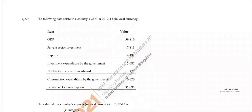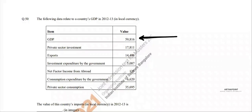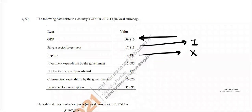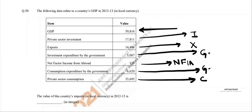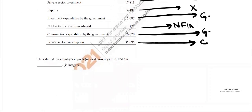GDP is already given to you. Private sector investment (I) is given, exports (X) are given, government investment expenditure (G) is given, net factor income from abroad (NFIA) is given, and consumption expenditure by government is given — this is part of G. These two club together for G, and consumption (C) is also given.